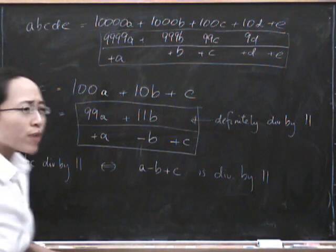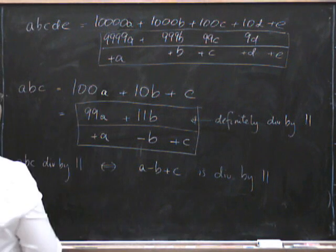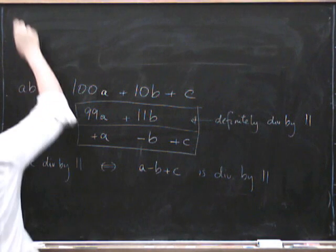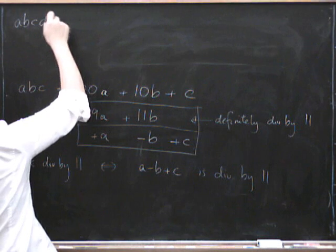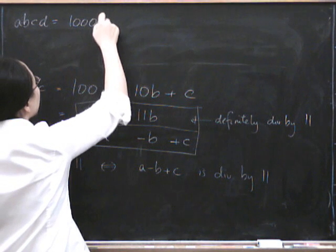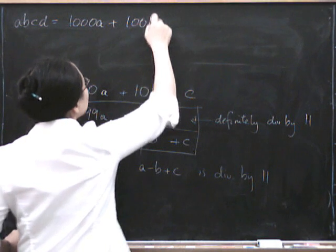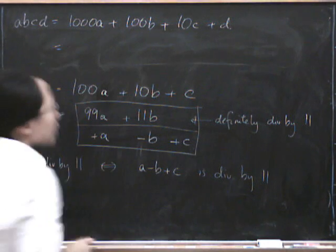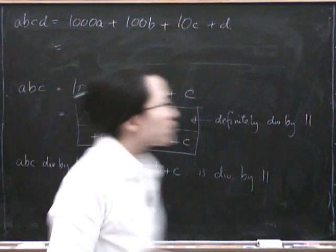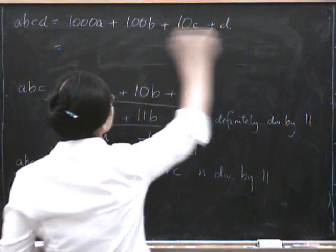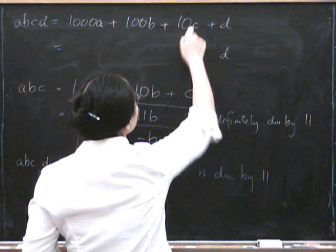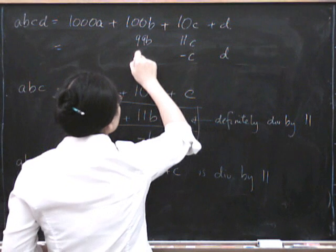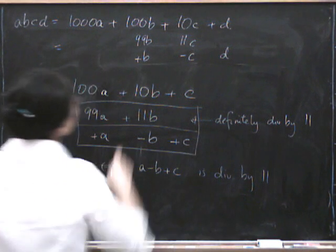So what about if we had another digit on the end of there? Let's try doing a four-digit number. So if we have ABCD, which of course equals 1000A plus 100B plus 10C plus D, what do we get? Well we know that this is going to be just a D, and we know that here we want an 11C minus C. We know that here we want a 99B plus B.